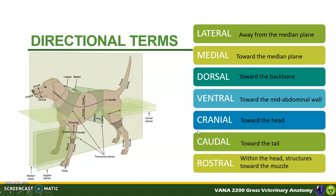Cranial and caudal are another pair of directional terms. Cranial means toward the head, while caudal means toward the tail. However, when dealing with structures of the head, the term cranial is usually not used; instead, the term rostral is used as an alternative, which means toward the muzzle.